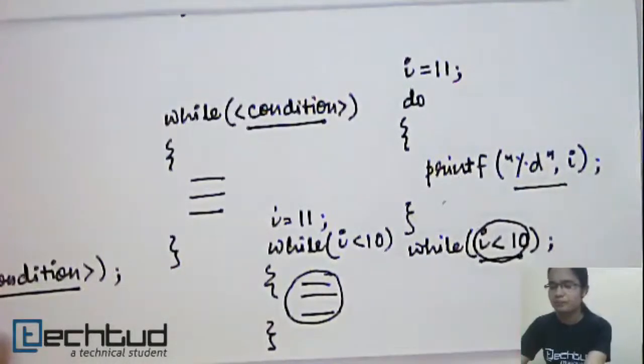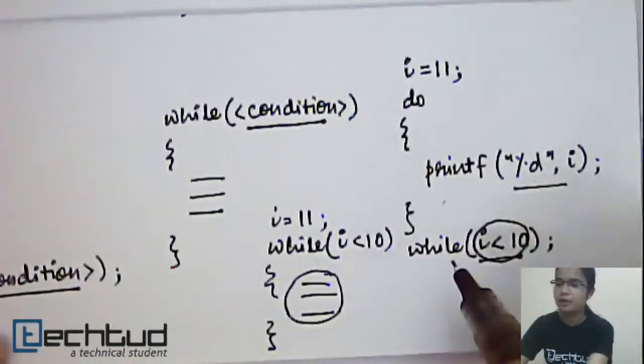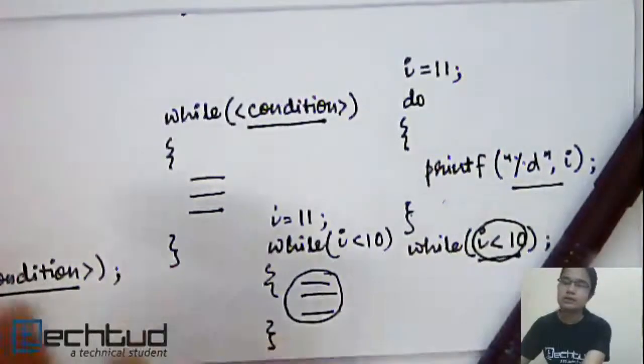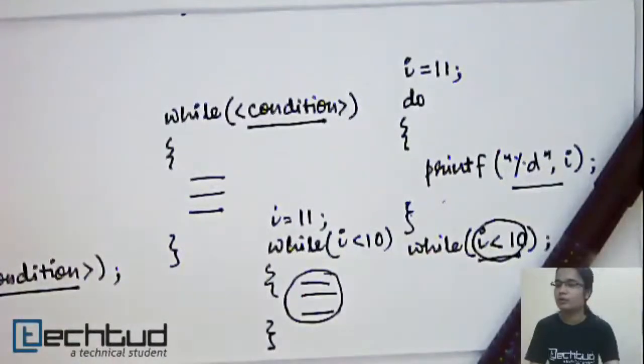So just remember this difference. Otherwise, in any other cases it acts exactly the same as while loop or for loop. If you have any doubt regarding do-while loop, you can ask in our doubt section. Hope it is clear to you. Thank you for watching.